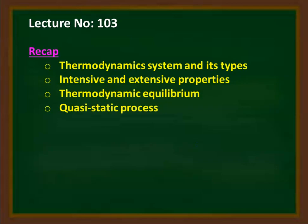We recap from the previous lectures. In the previous two lectures, we discussed the thermodynamic system and the various types of thermodynamic system, intensive and extensive properties, thermodynamic equilibrium — which includes mechanical equilibrium, chemical equilibrium, and thermal equilibrium — and quasi-static process. Quasi-static means almost-static process; all quasi-static processes are reversible processes.